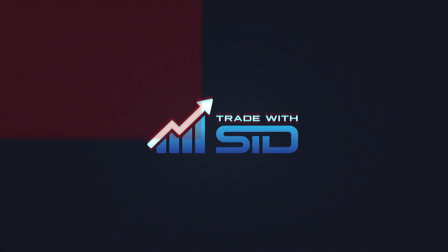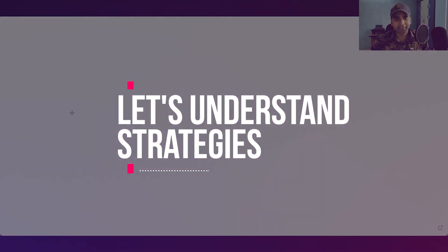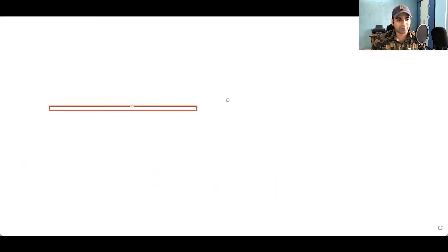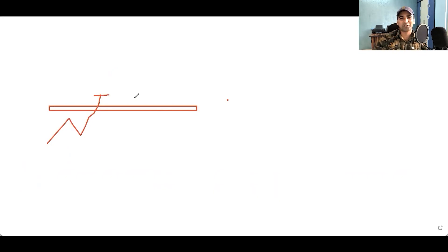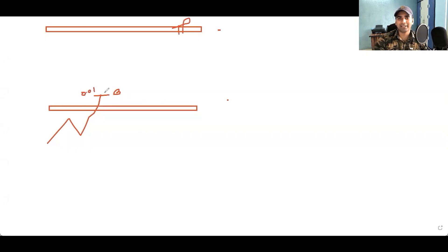The strategy is basically this: you have a resistance or a supply zone. Once the zone breaks, you are going to take a buy entry. You will set your take profit at the next available supply zone, or the next available resistance. The next available supply zone will act as your take profit.